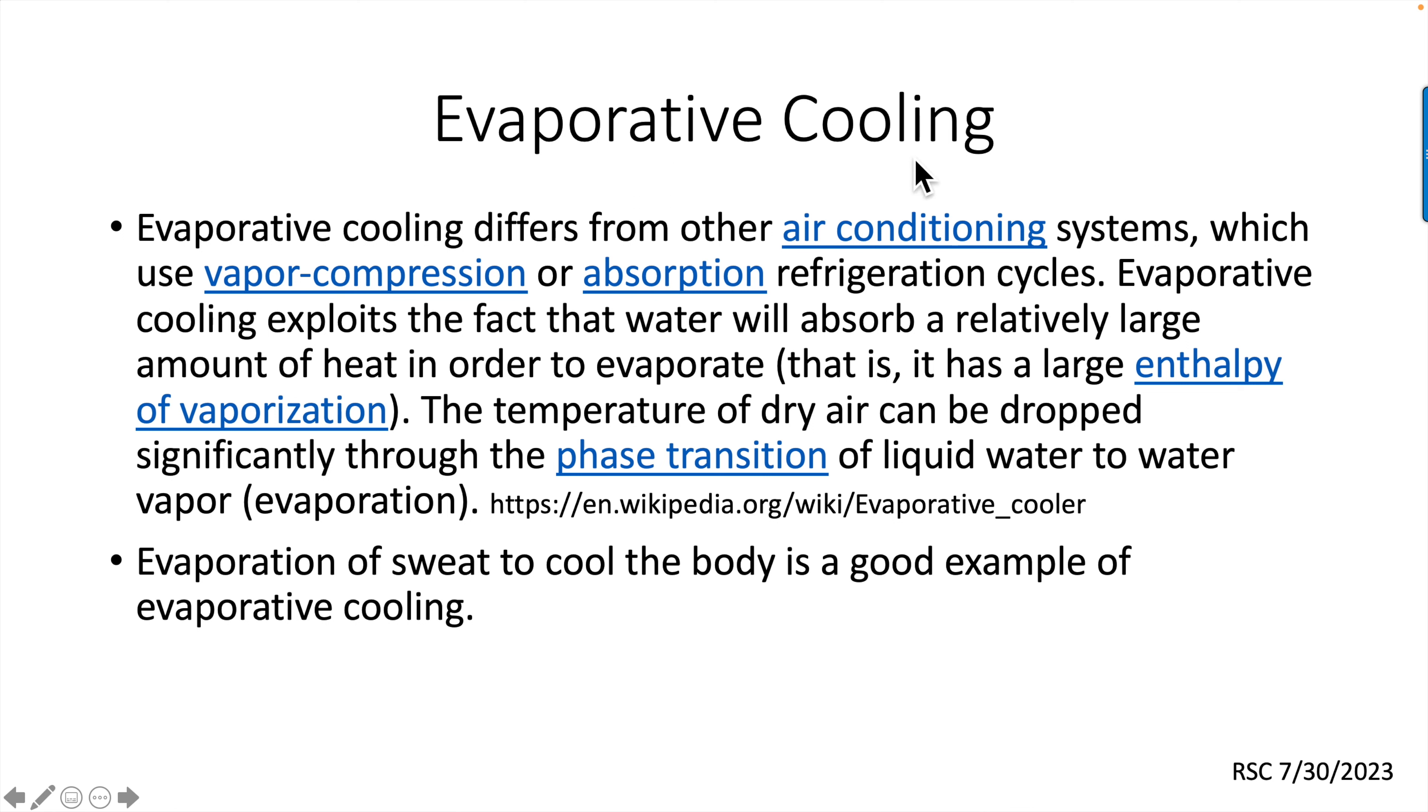Let's talk about evaporative cooling. Evaporative cooling differs from other air conditioning systems which use vapor compression or absorption refrigeration cycles. Evaporative cooling exploits the fact that water will absorb a relatively large amount of heat in order to evaporate—that is, it has a large enthalpy of vaporization. Temperature of dry air can be dropped significantly through the phase transition of liquid water to water vapor or evaporation. Of course, evaporation of sweat to cool the body is a good example of evaporative cooling. This is important because evaporative cooling is what's happening in the wet bulb in the sling psychrometer.